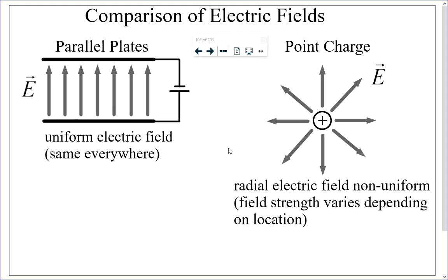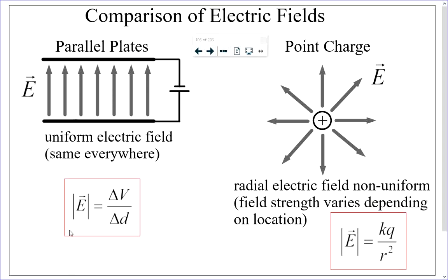You will likely see two-dimensional motion problems with charged particles fired horizontally through a vertical electric field. Analyze motion in two directions separately: horizontal motion is uniform (no force horizontally), and vertical motion is uniformly accelerated by the electric force. This is just like projectile motion from Physics 20. Uniform motion uses distance = speed × time; accelerated motion uses kinematic equations with initial velocity, final velocity, acceleration, displacement, and time.